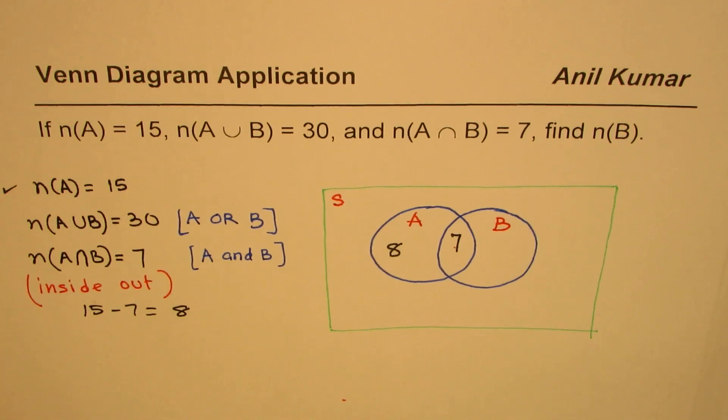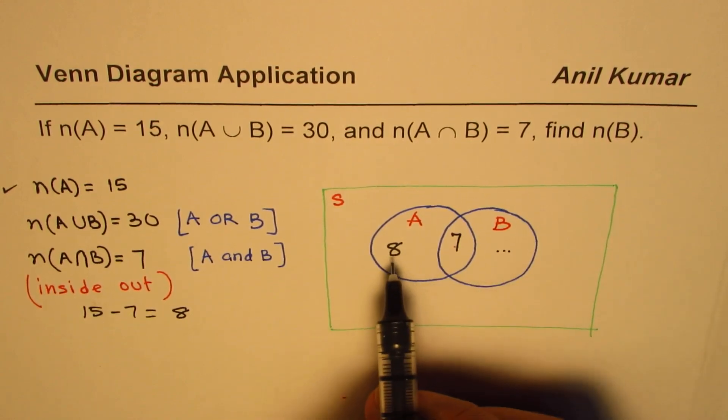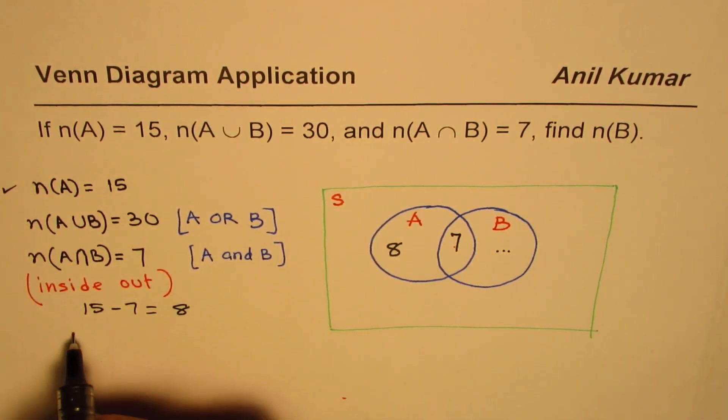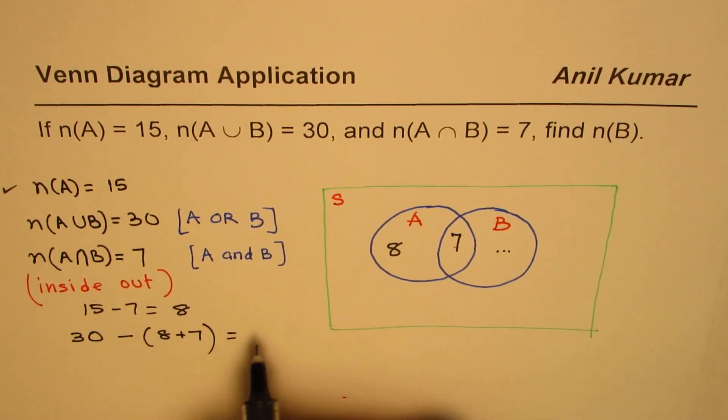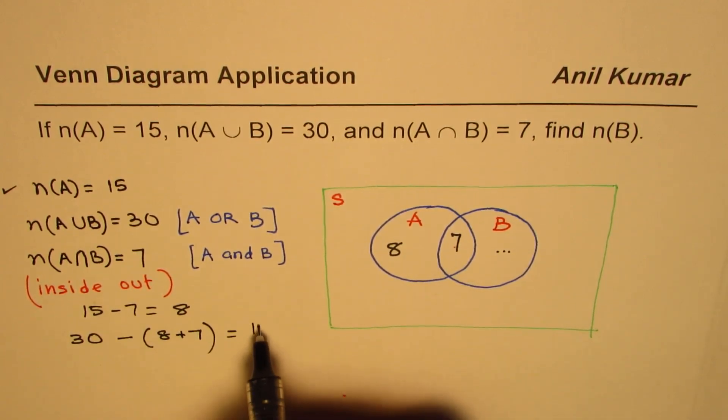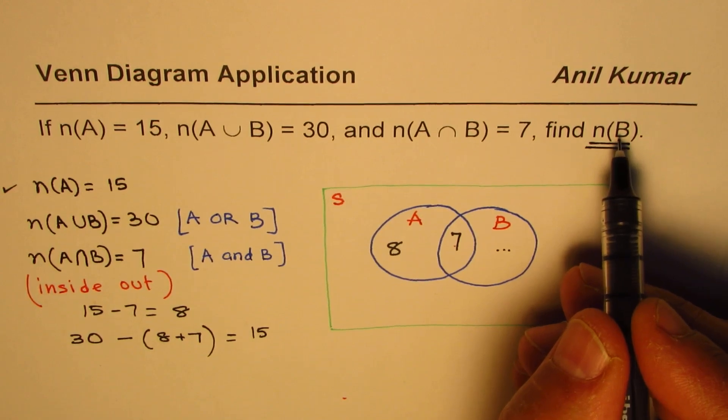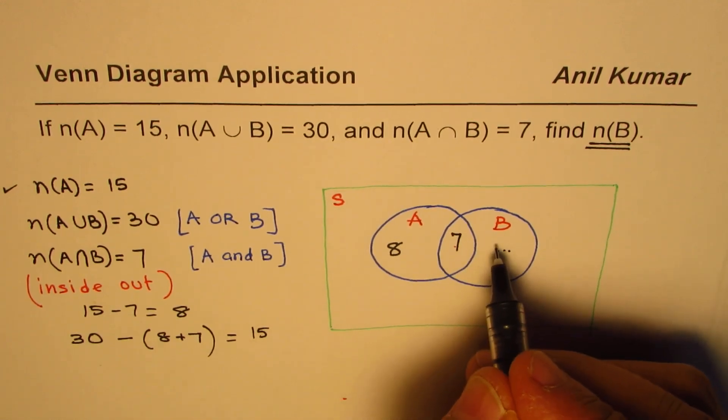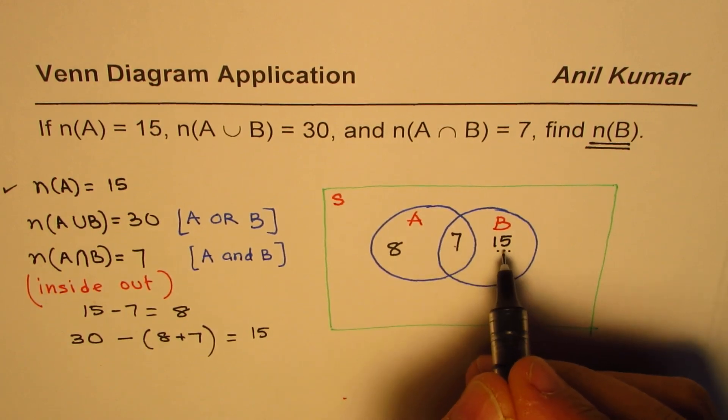Now, in that, 7 is being counted again. So, what we have here is, we have some number here, which will make this as 30. Number of elements in B should be, from 30, will take away the sum of 8 and 7. That gives you the number, that does not give you the total number of elements in B. The number of elements here are indeed 15, which is in B, but not in the intersection.